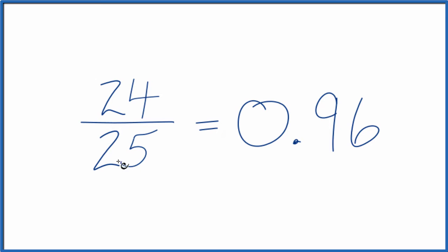So the fraction 24 over 25 equals the decimal 0.96. They're equal, they're equivalent, just written differently.